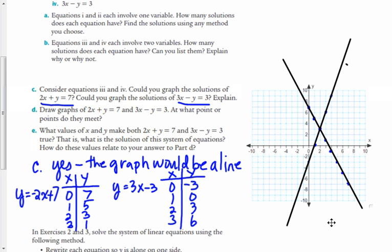And the next question D says, at what point or points do they meet? They meet at one point and that point is 2, 3. And then it says, what values of x and y make both this equation and this equation true? That is, what is the solution of this system of equations? So that's what we're talking about, a solution to a system, is what solutions do they have in common? And as you can see by the graph and by this table, when x is 2, y is 3. So we call that the solution of the system.